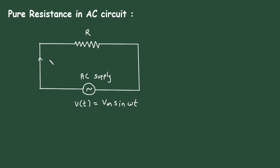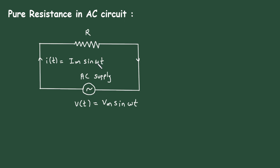And let's say the current is I(t) = Im sin(ωt), where Im is the maximum current.